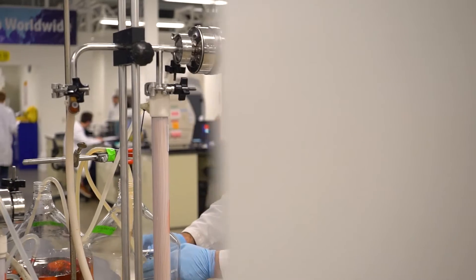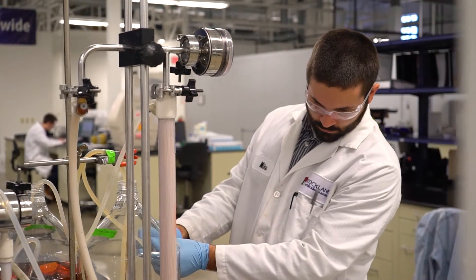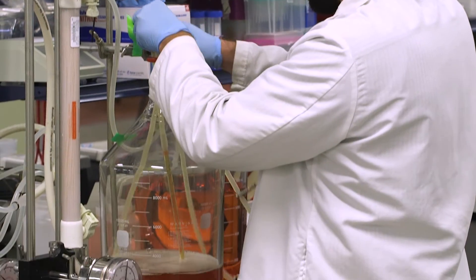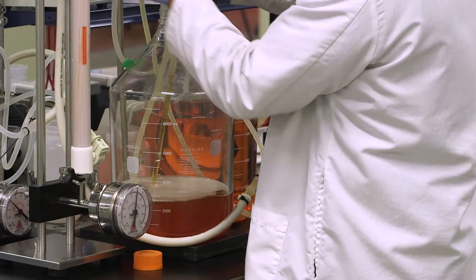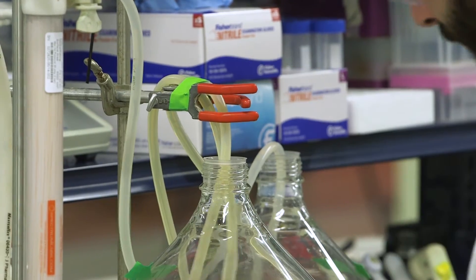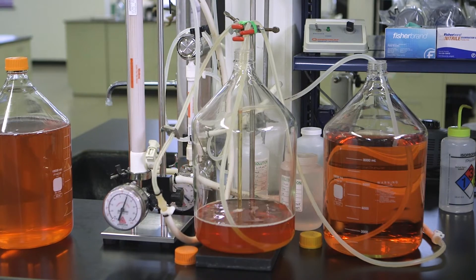The production supernatant that's collected from our production suite is then concentrated down to a 10x or 20x volume for the purification team to have a highly concentrated smaller volume sample to pour over their protein columns.